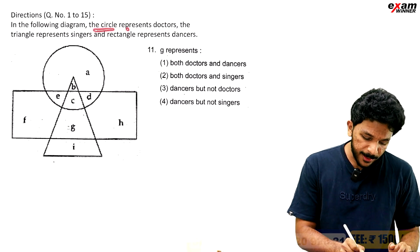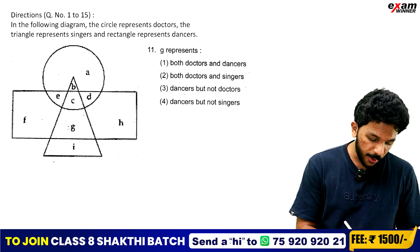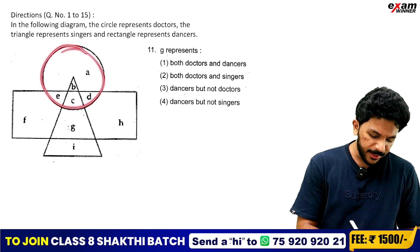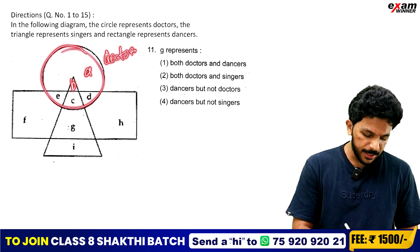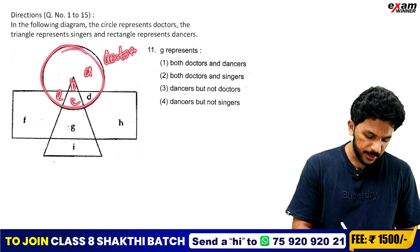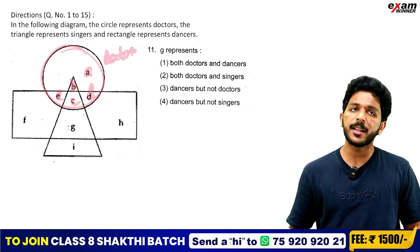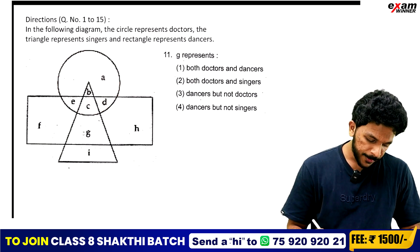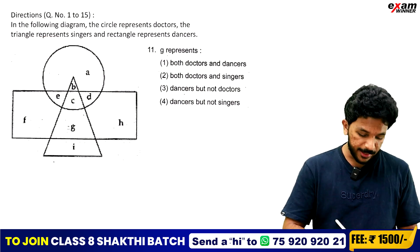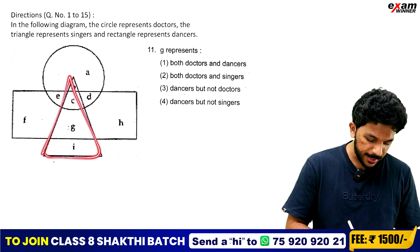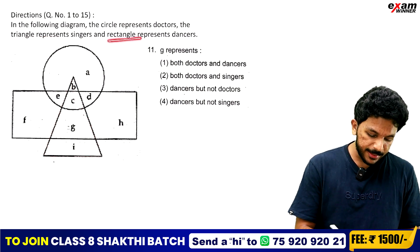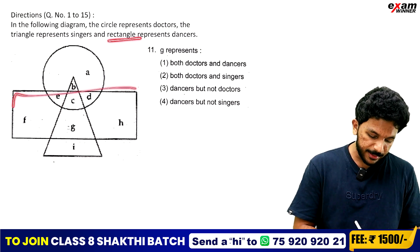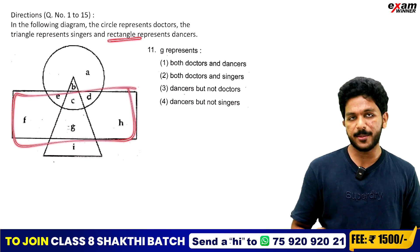The circle represents doctors. This diagram is about doctors — A doctor, B doctor, E, C, D doctor. Triangle represents singers. And rectangle represents dancers.